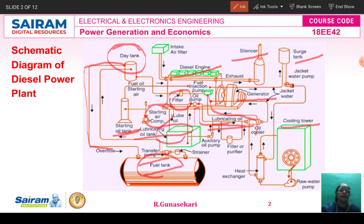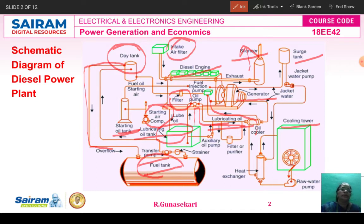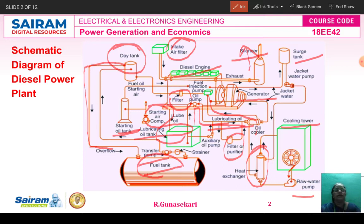This is the cooling tower. The exhaust gas is exhausted through the silencer. This is the intake air filter. From the raw water pump, water goes to the cooling tower where it is cooled, then goes to the heat exchanger. The filter and purifier are used in the lubricating oil system.